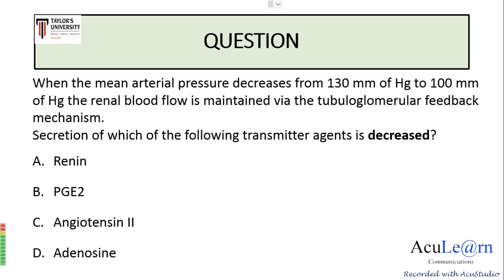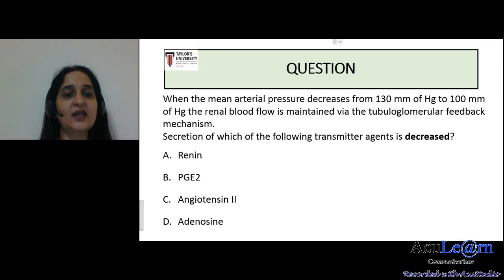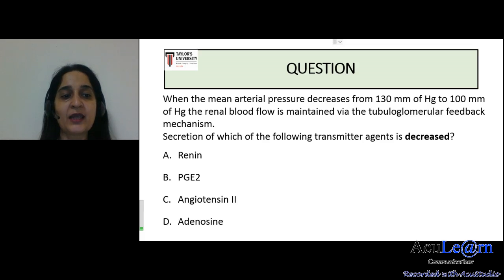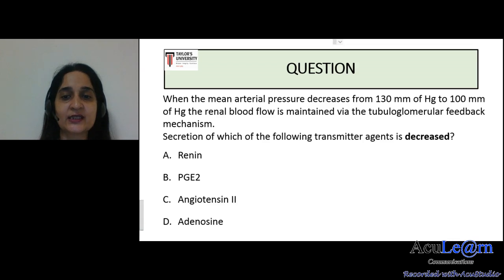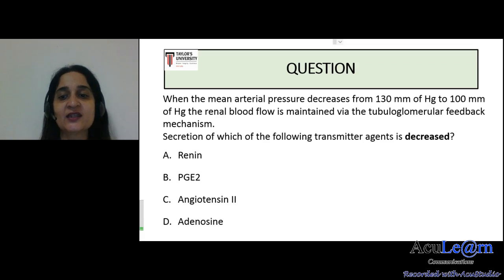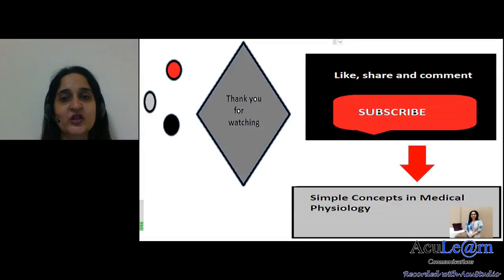Here is a question: when the mean arterial pressure decreases from 130 mmHg to 100 mmHg, the renal blood flow is maintained via the tubuloglomerular feedback mechanism. The secretion of which of the following transmitter agents is decreased? A) Renin, B) PGE2, C) Angiotensin 2, D) Adenosine. Please select the right answer and leave it in the comments. Thank you for watching — please like, share, comment, and subscribe to the channel Simple Concepts in Medical Physiology.